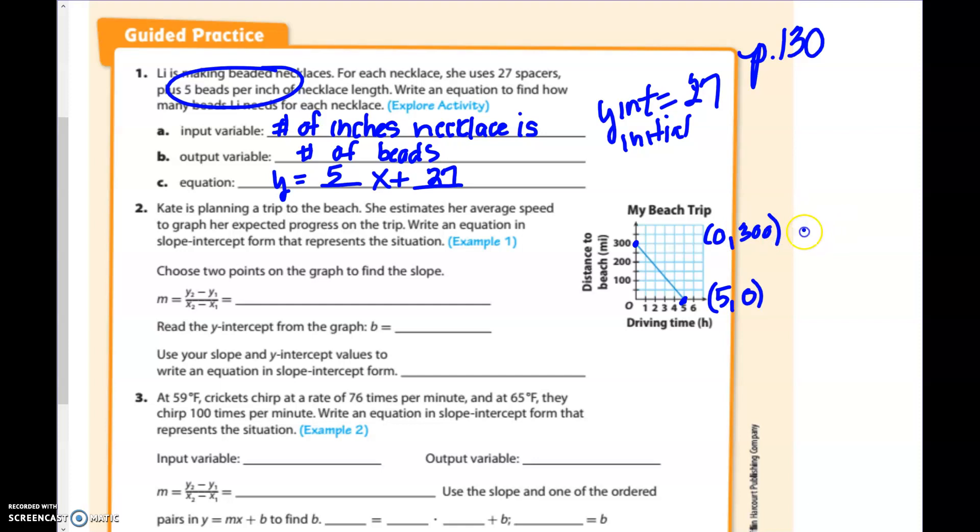So the one down here on the bottom is over 5, up 0. And this one up here on the top is over 0 and up 300. So remember, when we're doing slope, we're going to do change in Y over change in X. And remember, our Y values are the second numbers in our ordered pairs. So I'm going to do 300 minus 0. And if I did 300 minus 0, then I have to do 0 minus 5 on the bottom. So 300 minus 0 is 300.